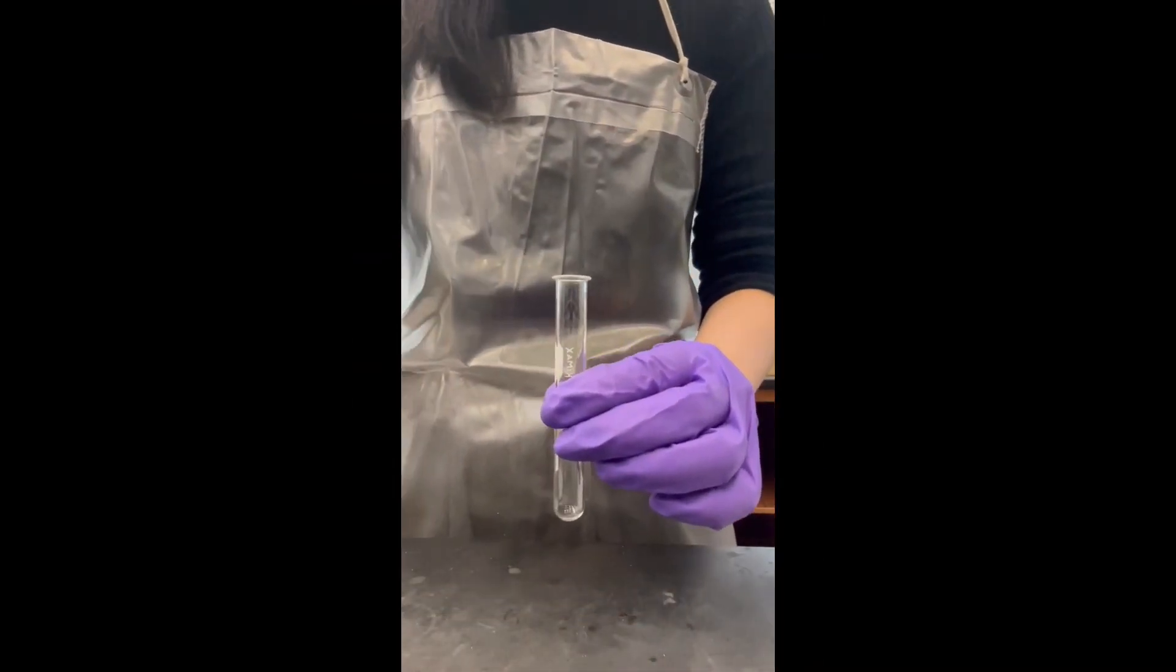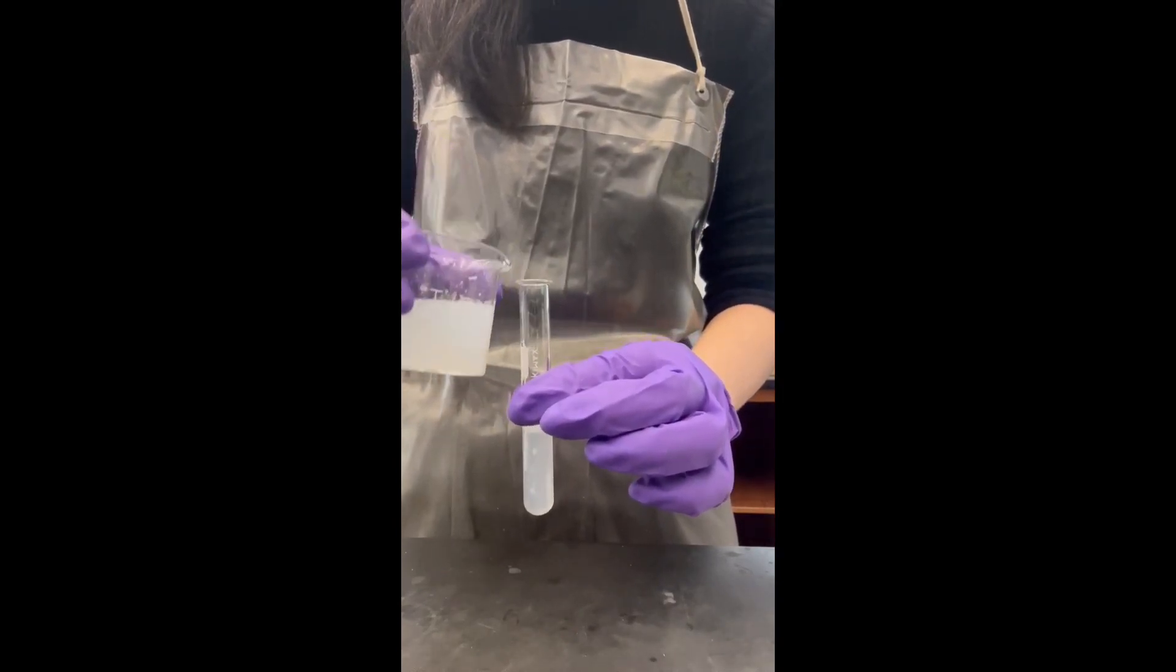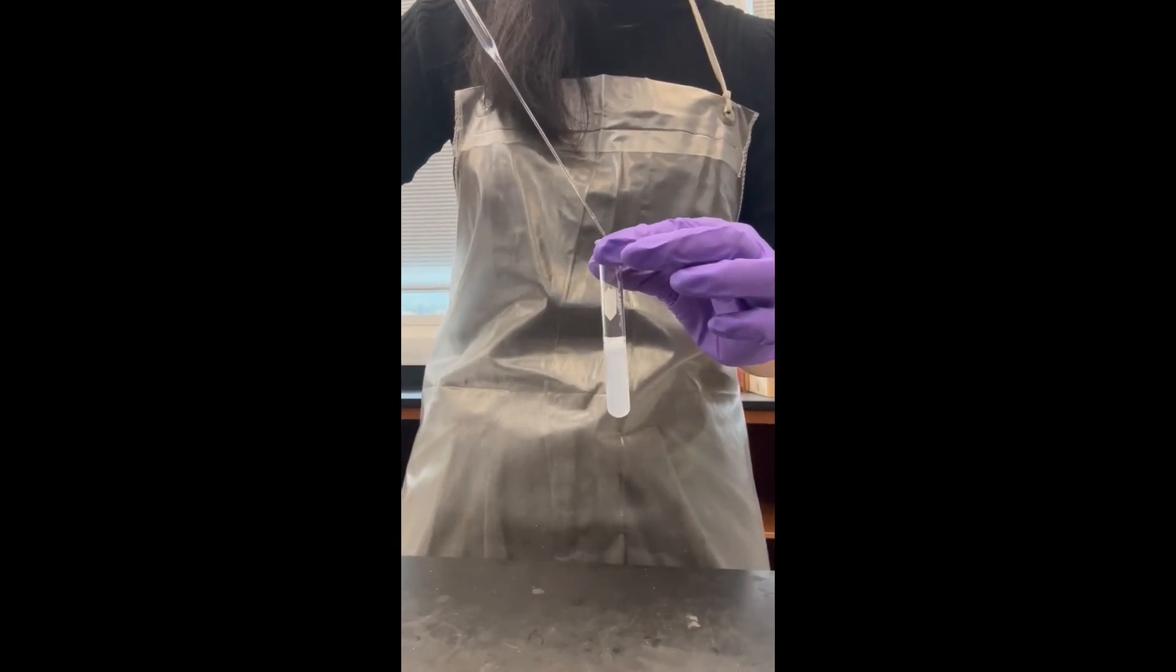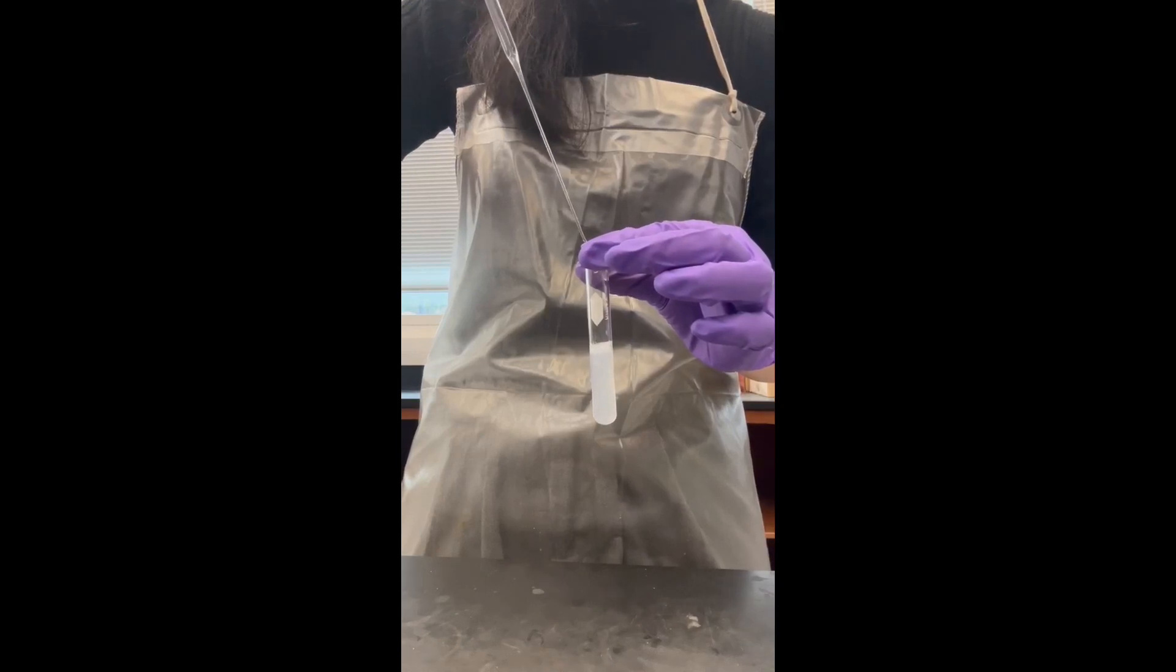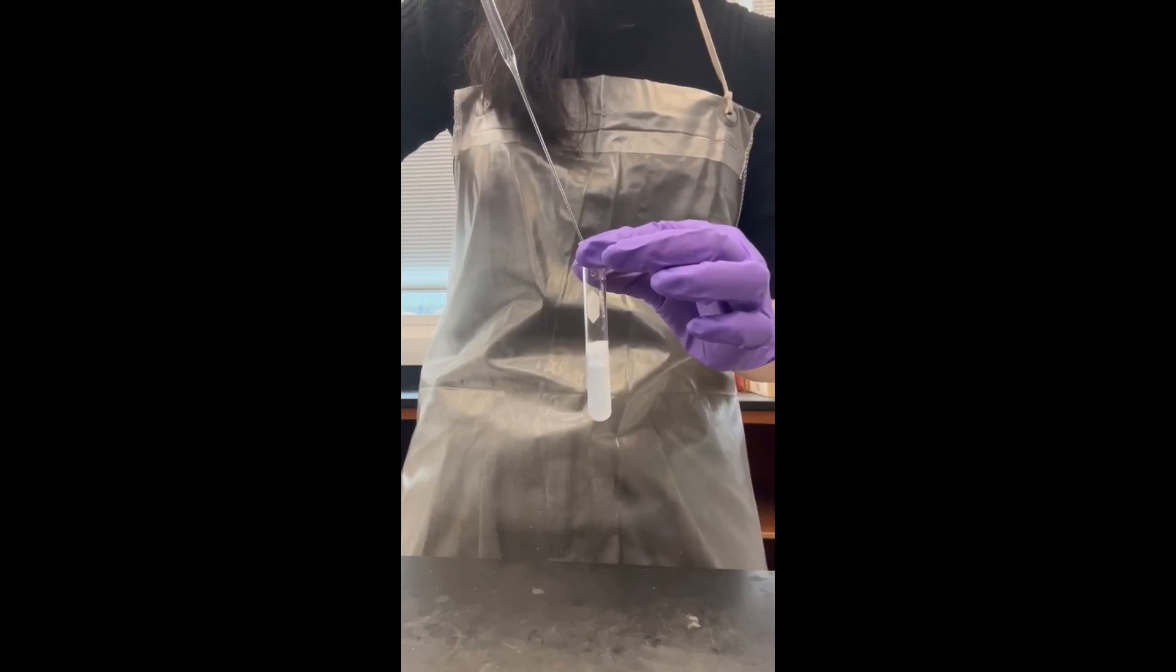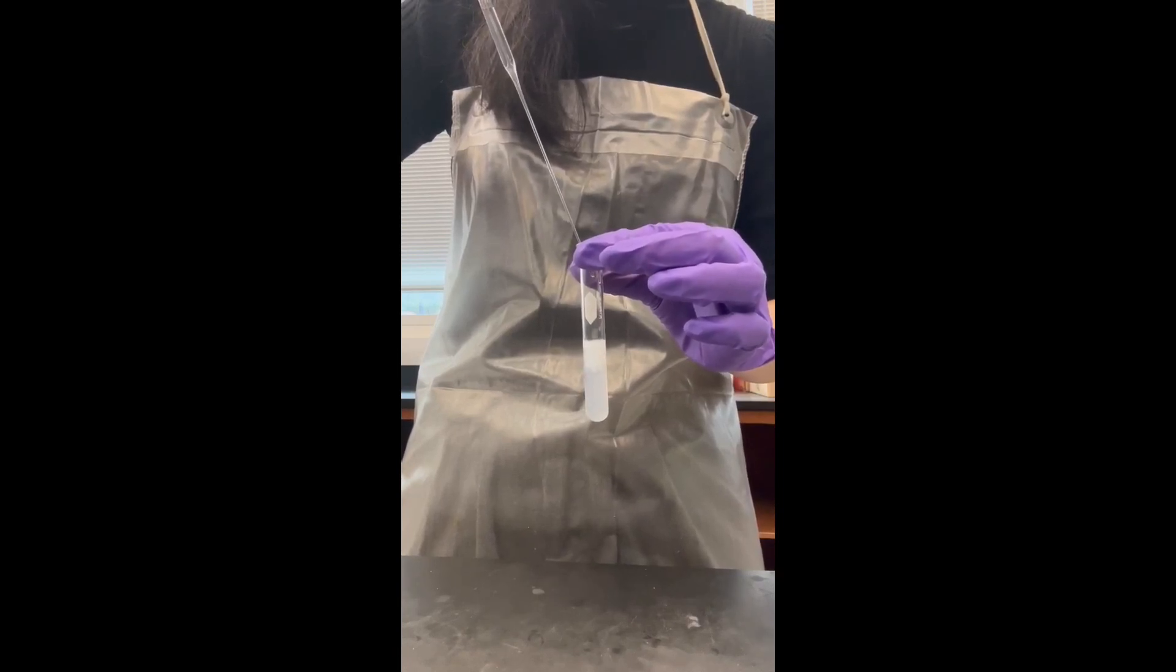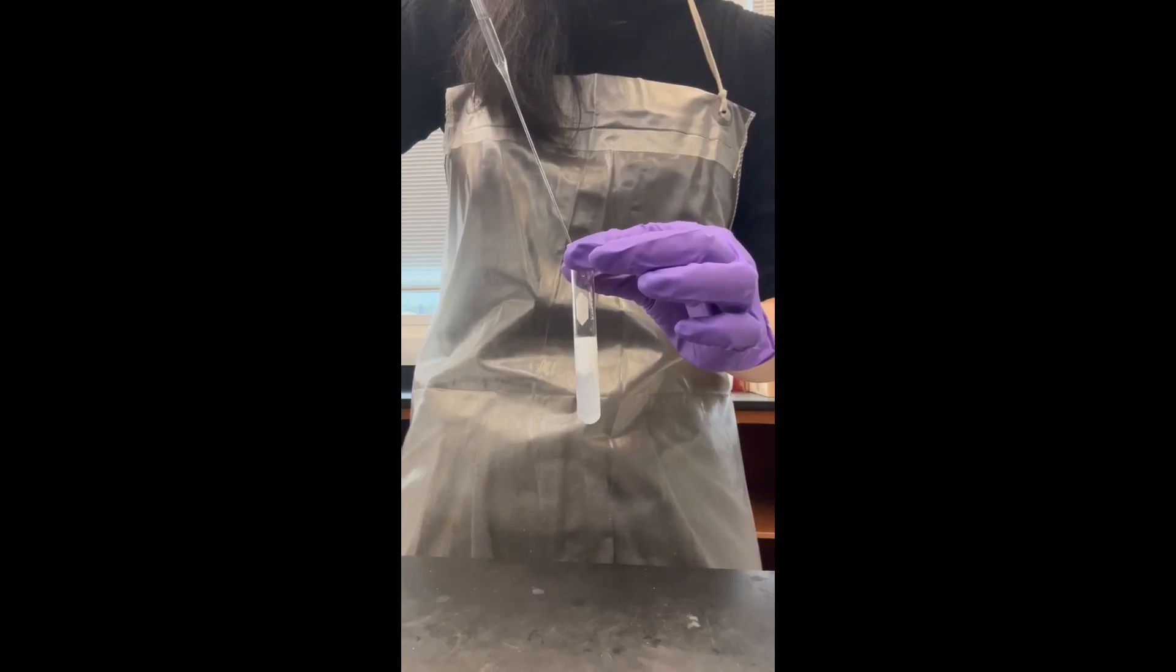For the hard water test, collect six dry and clean small test tubes. Pour about 5 milliliters of sodium soap solution to three separate test tubes. Add 20 drops of magnesium chloride solution to the first tube, 20 drops of calcium chloride to the second tube, and 20 drops of iron chloride to the third tube. Mix the solutions in each test tube well and record your observations in your data sheet.